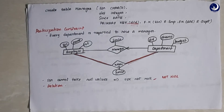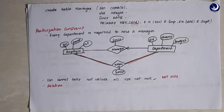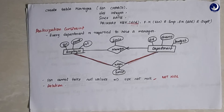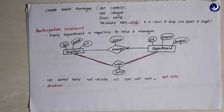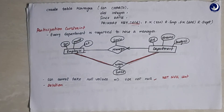Now let's look at the participation constraint. The diagram depicts that every department must have a manager. This states that every employee should be participating in some department — no employee should be left without a department assignment. The unique identifier for an employee is SSN. So in the departments-manager relationship, SSN cannot take null values, meaning no employee should be left idle without being assigned to some department. In the relational model, we achieve this by specifying SSN to be NOT NULL using the NOT NULL constraint.